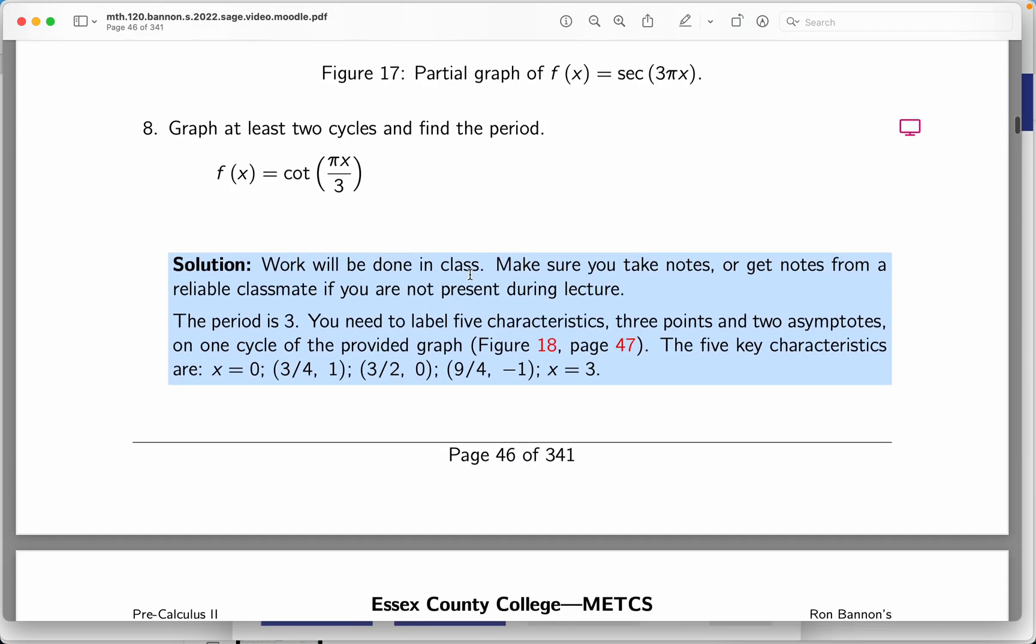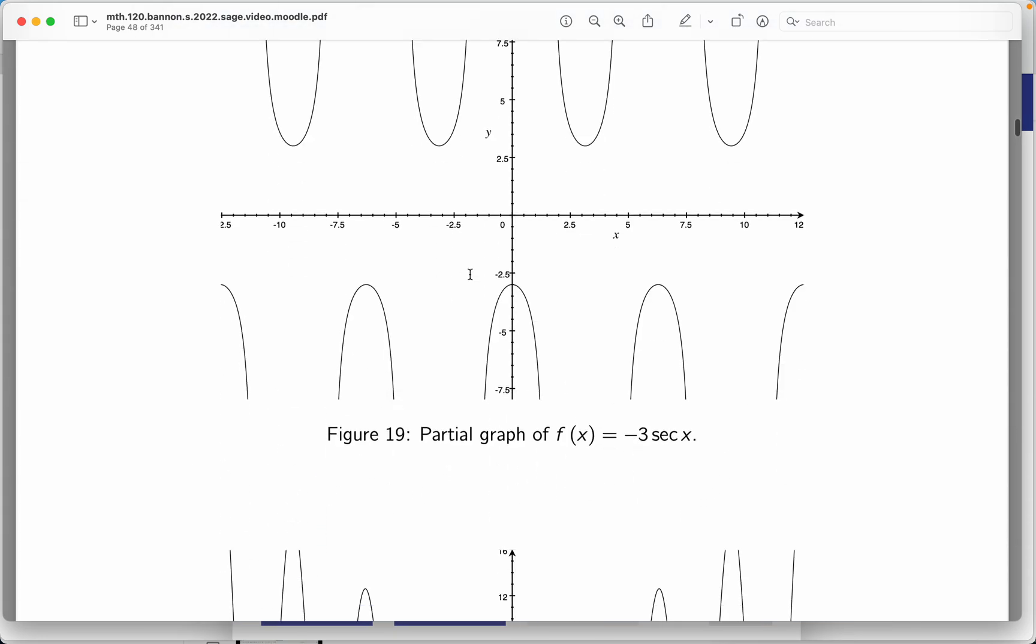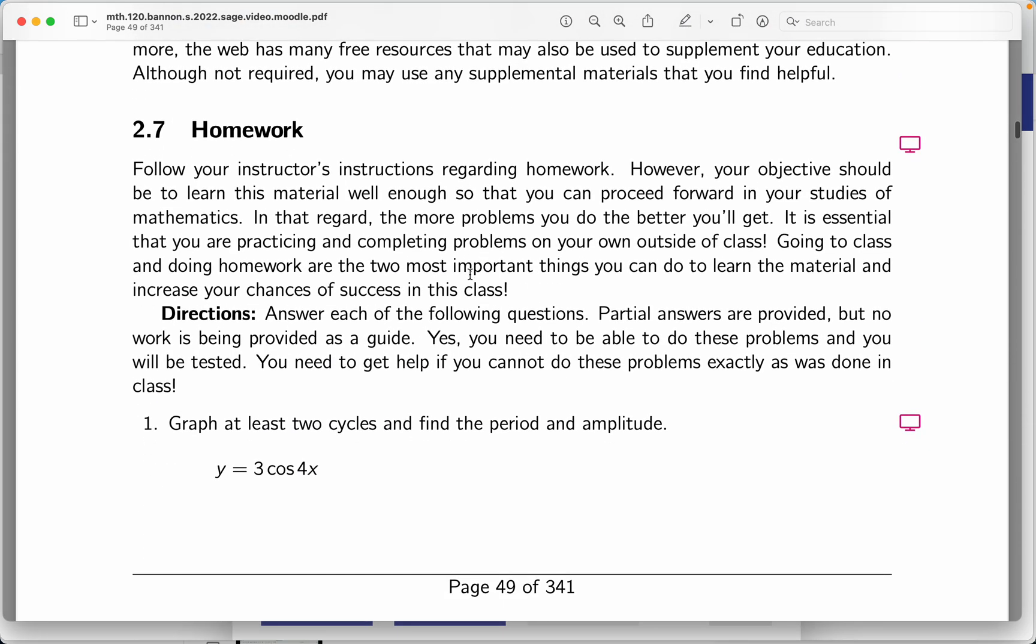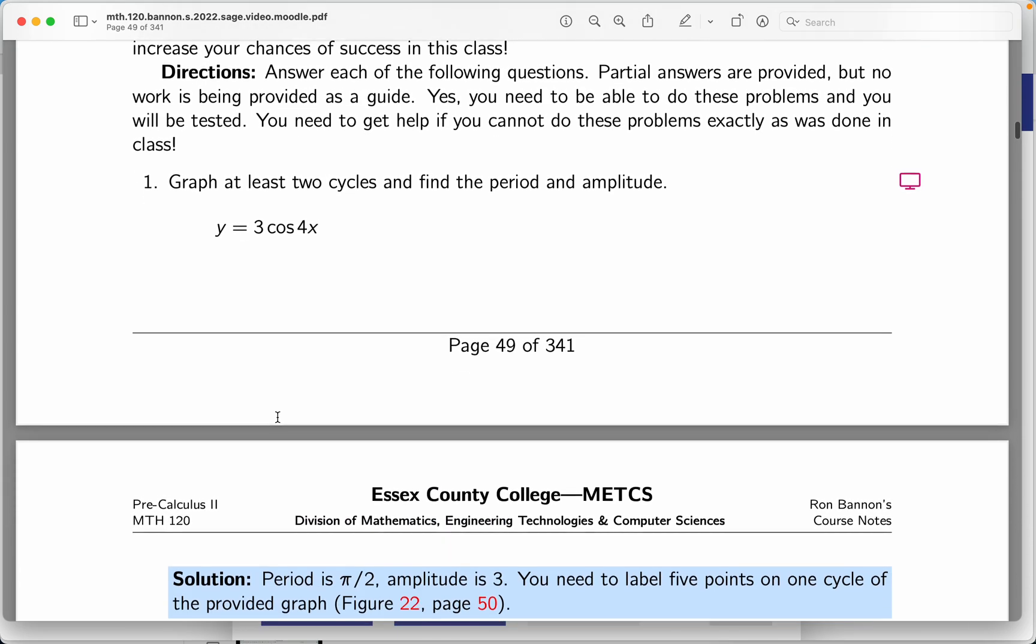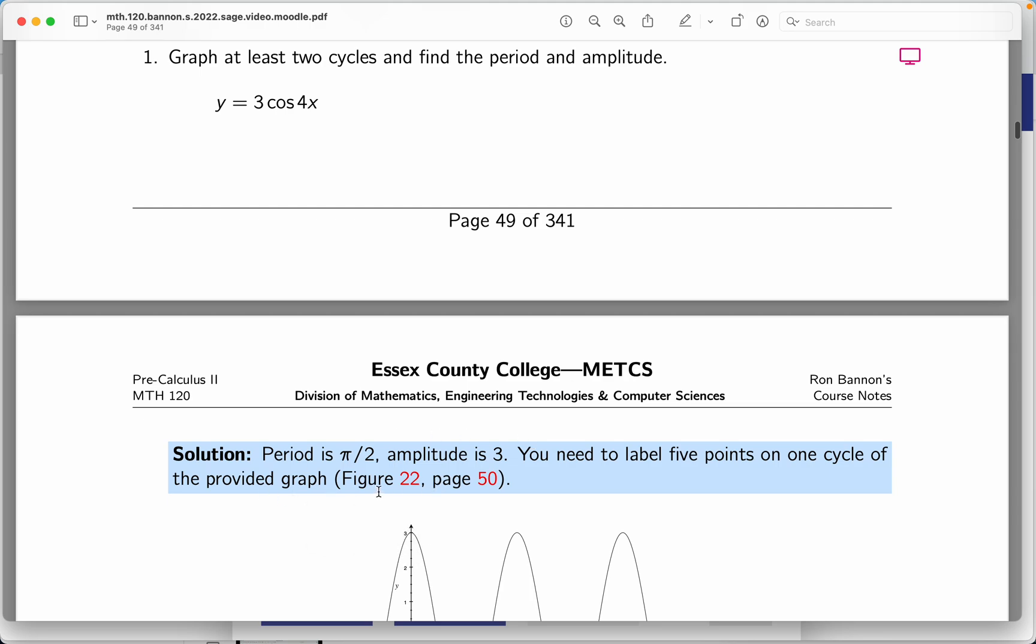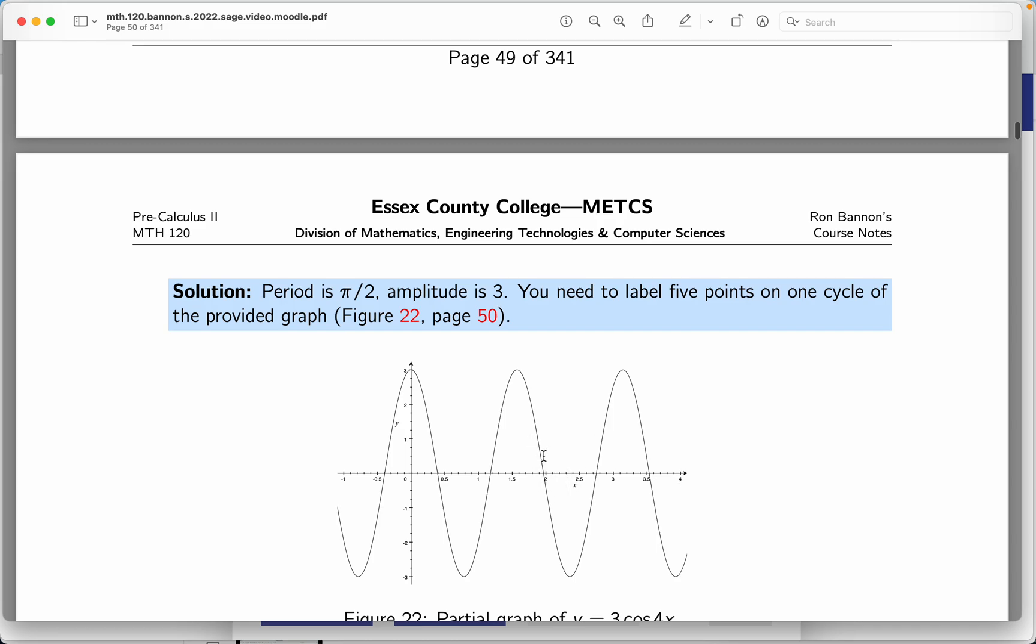Well, they do need to try. Let me scroll through the problems that are done in class. There would be homework problems. Now, when I say homework problems, homework is something that's done outside the classroom. So when you're doing the homework problems, they're given problems that are very similar to what you did in lecture during the examples. I also put down the period and amplitude, and I put a sample picture down. And what does it say? You need to label five points on one cycle.